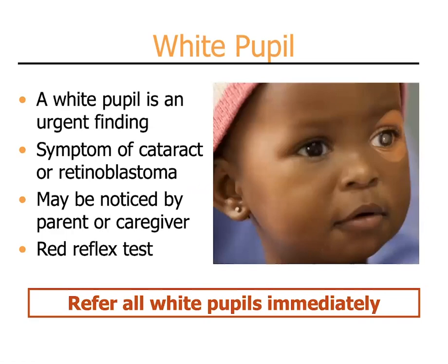The white pupil is an urgent finding and is something that all children should be checked for. The white pupil, as seen in the photograph on the right side in the patient's left eye, can be a symptom of cataract — clouding of the lens — or retinoblastoma tumors inside the eye. Sometimes they can be noticed by the parent or caregiver, but other times they may only be noticeable on examination. This examination is the red reflex test. All white pupils should be referred or further investigated immediately.